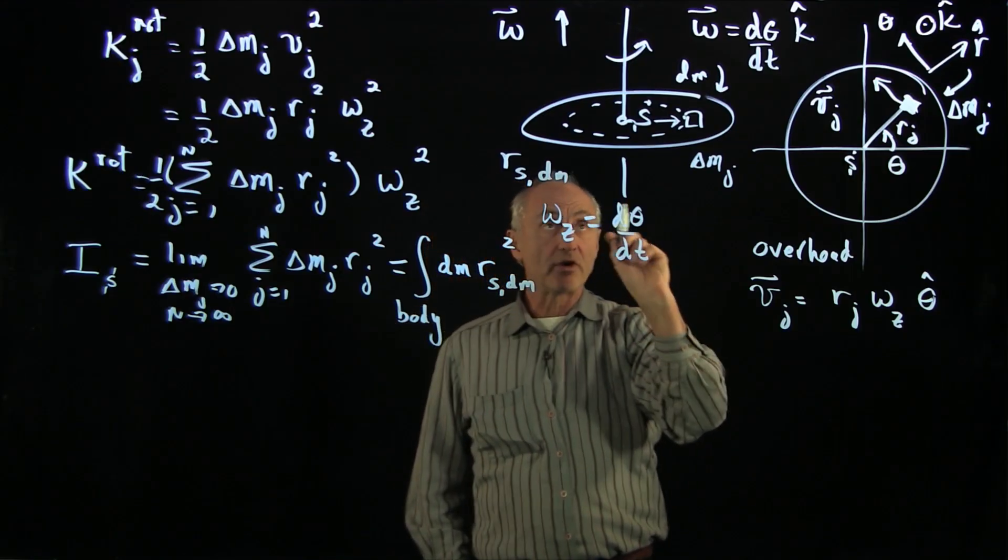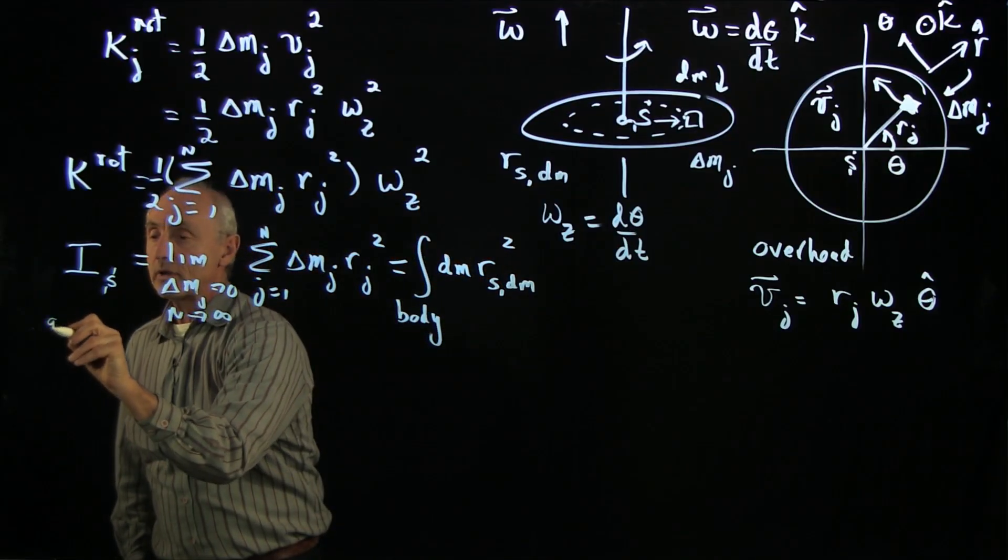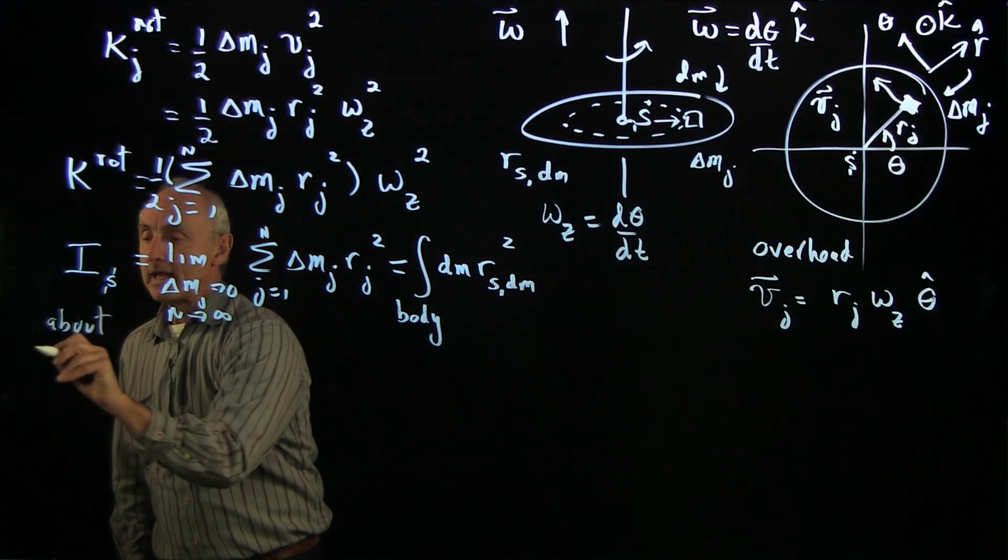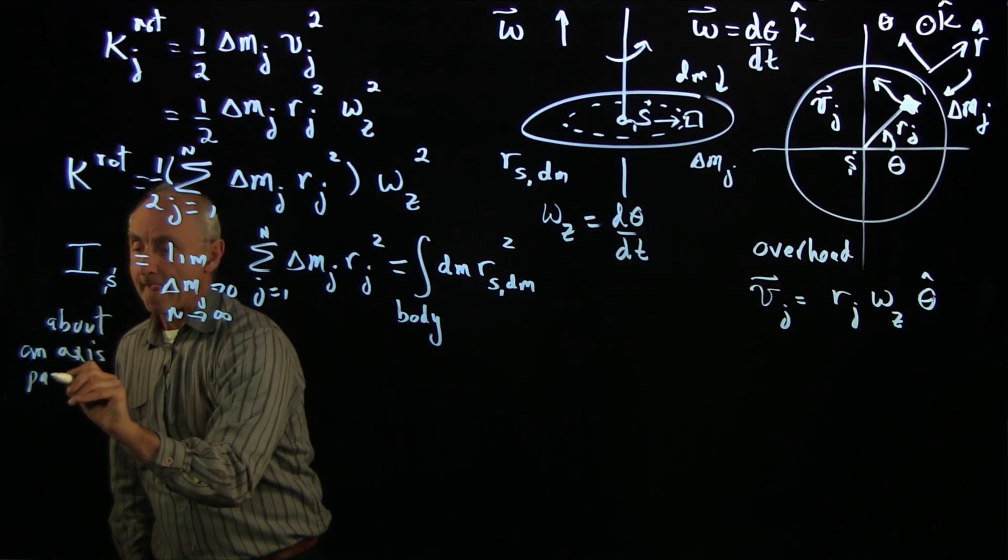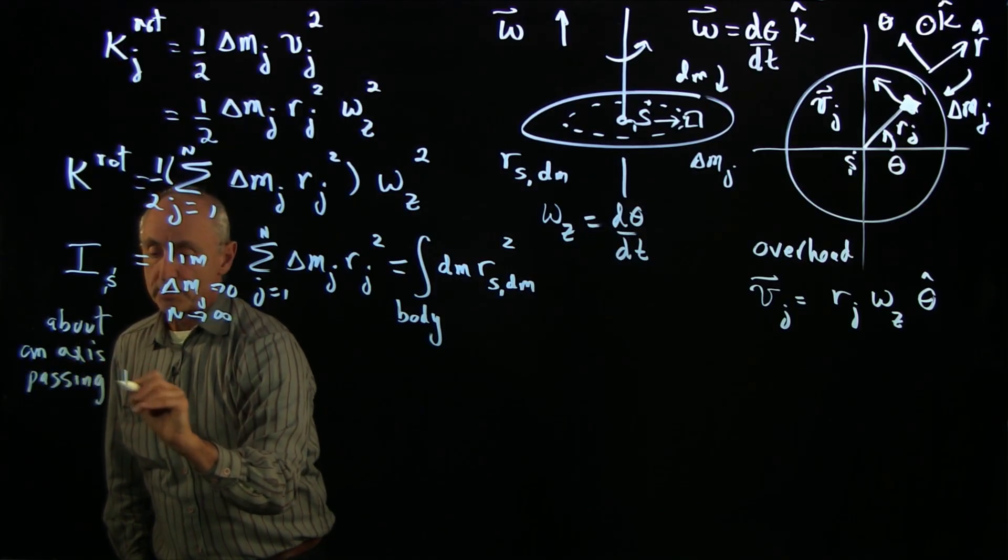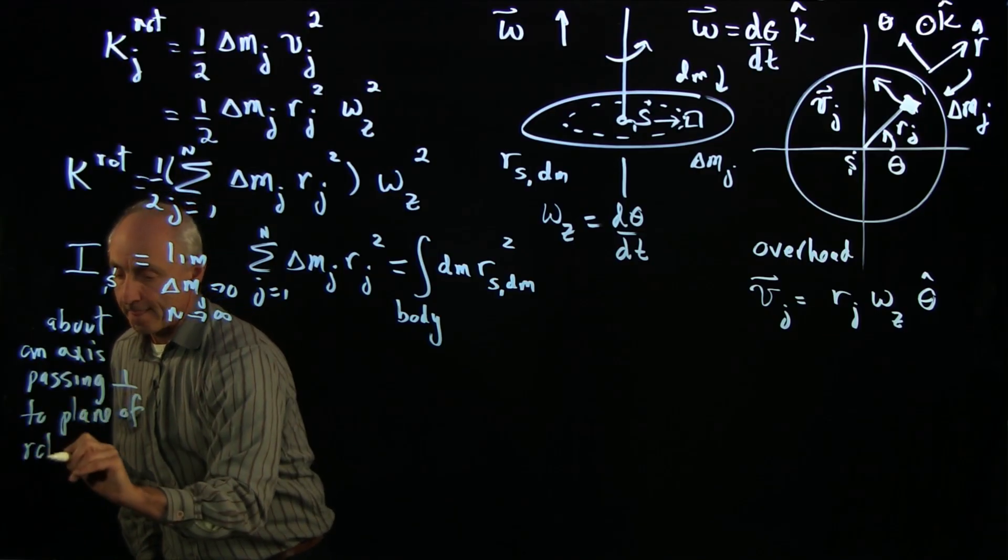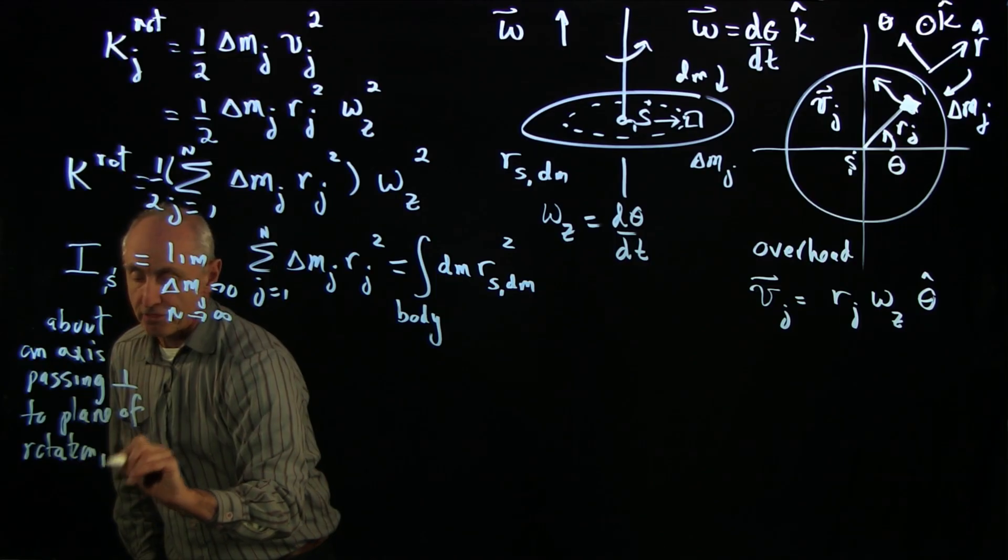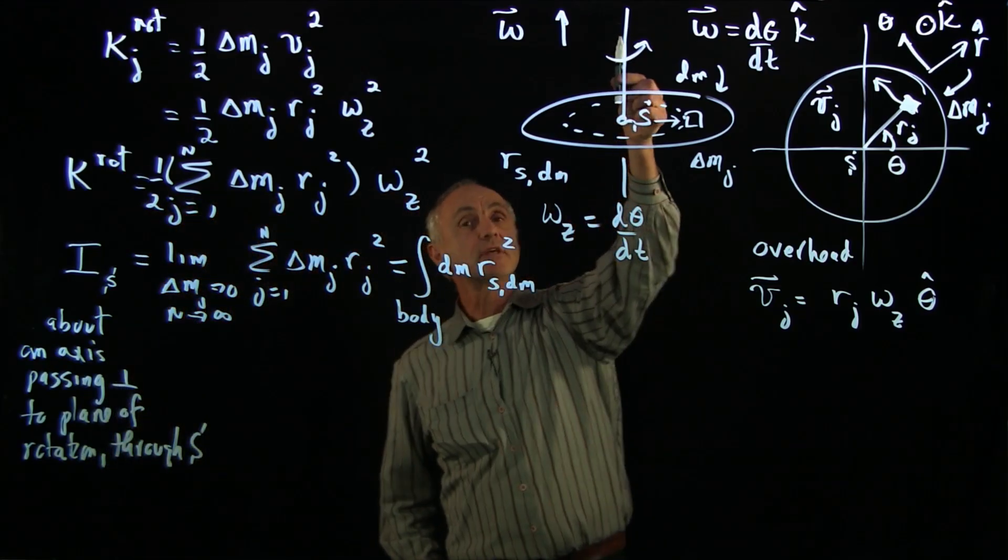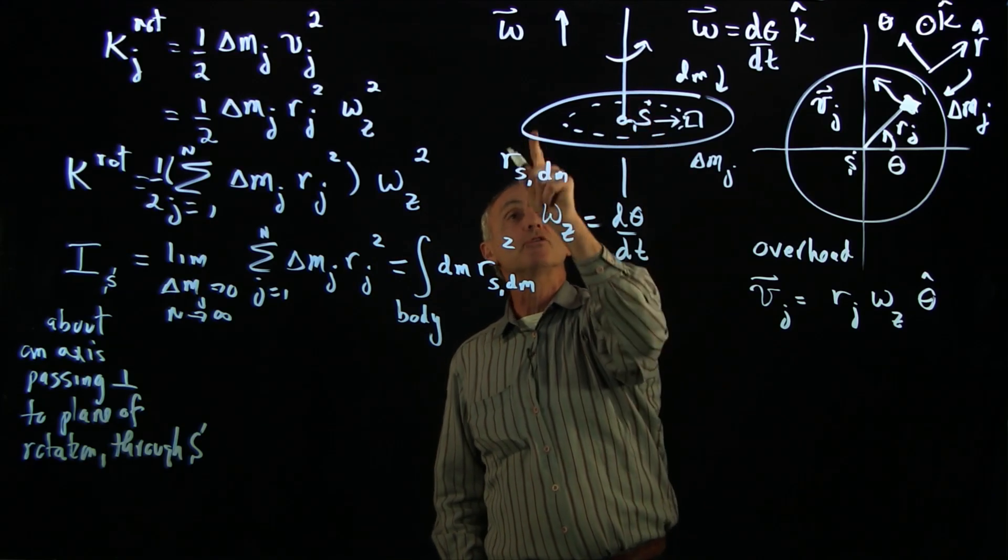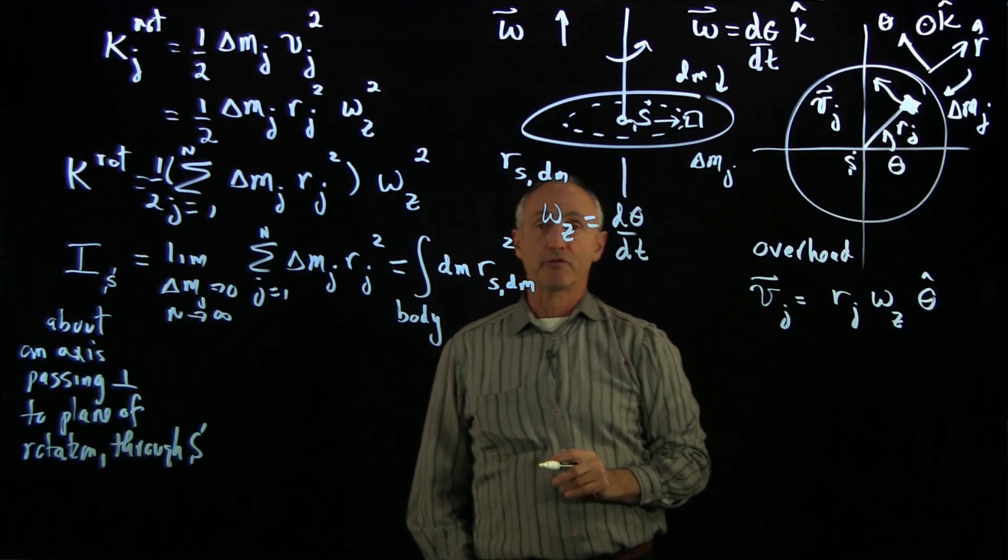Now, again, what's very important to realize, it's a moment about a particular axis. So this is about an axis passing perpendicular to the plane of rotation and through s, the point s. So it's an axis that's passing perpendicular to the plane of rotation, passing through the point s. And this is what we call the moment of inertia of a body.